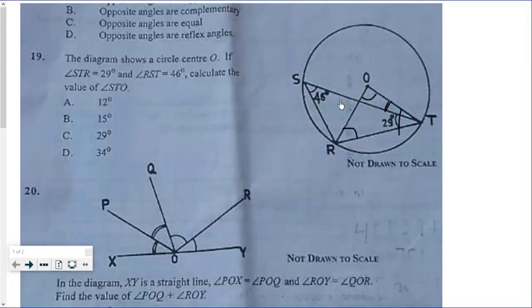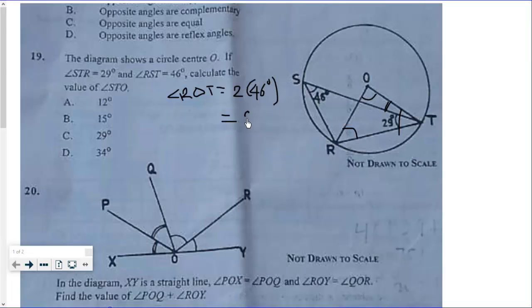We know that this is an angle subtended by chord RT at the center, and this same chord subtends angle 46 degrees at the circumference. So the angle at the center, which is angle ROT, is equal to 2 times 46 degrees.